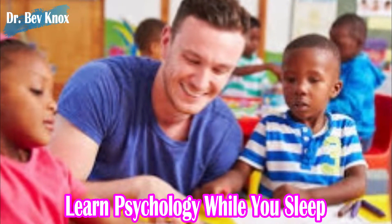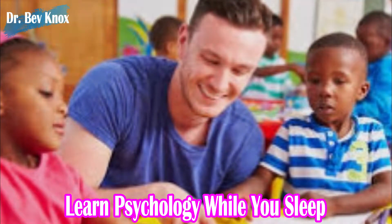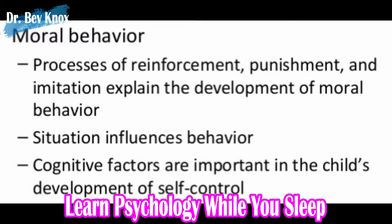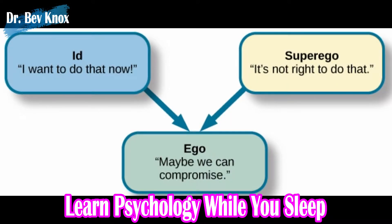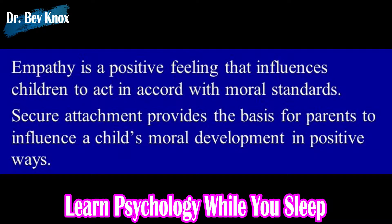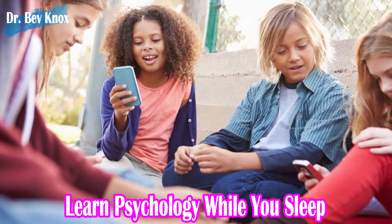The processes of reinforcement, punishment, and imitation have been used to explain acquisition of moral behavior, but they provide only a partial explanation. Situational variability is stressed by behaviorists. Social cognitive theory emphasizes a distinction between moral competence and moral performance. In Freud's theory, the superego is the moral branch of personality. According to Freud, guilt is the foundation of children's moral behavior. Empathy is an important aspect of moral feelings and it changes developmentally.